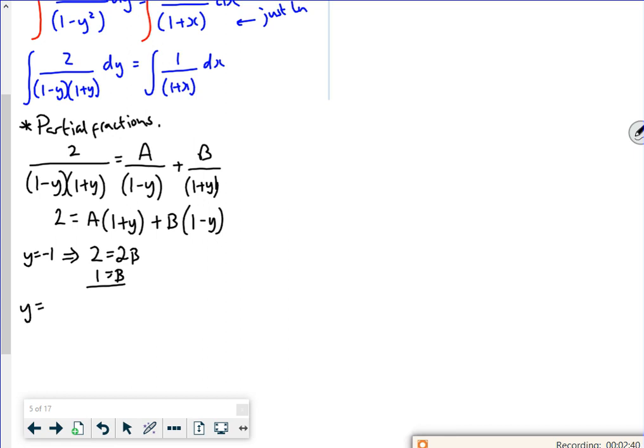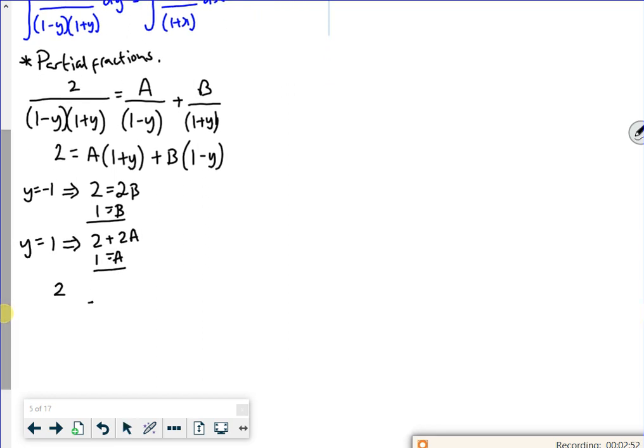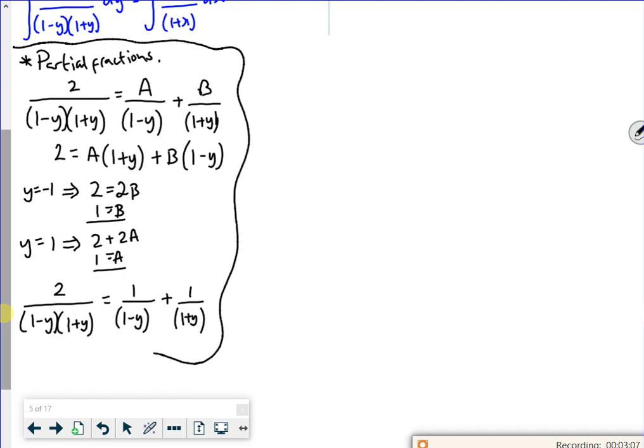If I use plus 1, that will get rid of the second bracket. So that will be 2 equals 2A, so 1 for A. That's quite easy. So my 2 over 1 minus y, 1 plus y, which looks a bit backwards, is 1 over 1 minus y plus 1 over 1 plus y. So all of this is kind of a side working, using partial fractions.